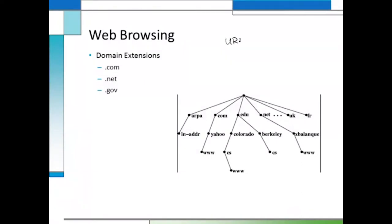The URL — the Universal Resource Locator — represents what in computing we call a fully qualified domain name. The domain names are how we identify, with easy-to-read words, the location of a server or computer we want to connect to. You'll often see an address like www.microsoft.com in your address bar, though some people just type microsoft.com without the www. By the way, www was designed to represent the World Wide Web. When searching for this address, we actually start from the right-hand side of the name.